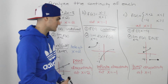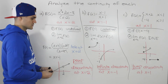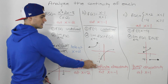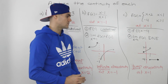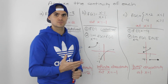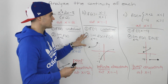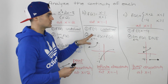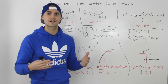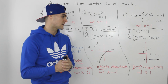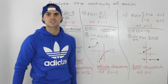So these are the three types of discontinuity you can run into: point discontinuity, infinite discontinuity, and jump discontinuity. Make sure you know how to differentiate between all three, because on a test they may ask you to analyze the continuity of a function and, if it's discontinuous, classify the type of discontinuity as well.